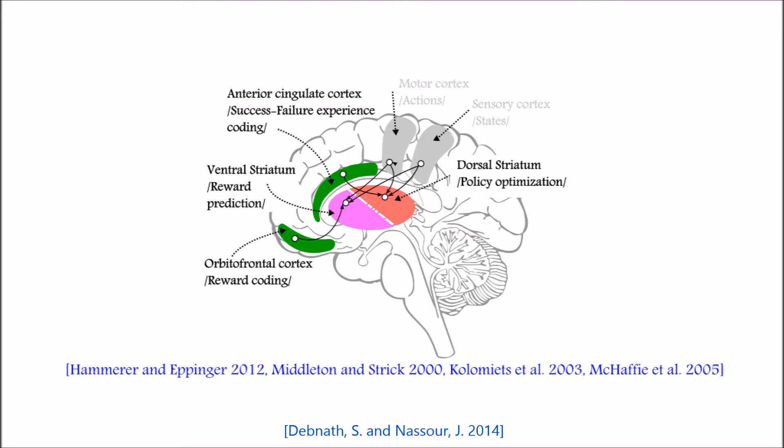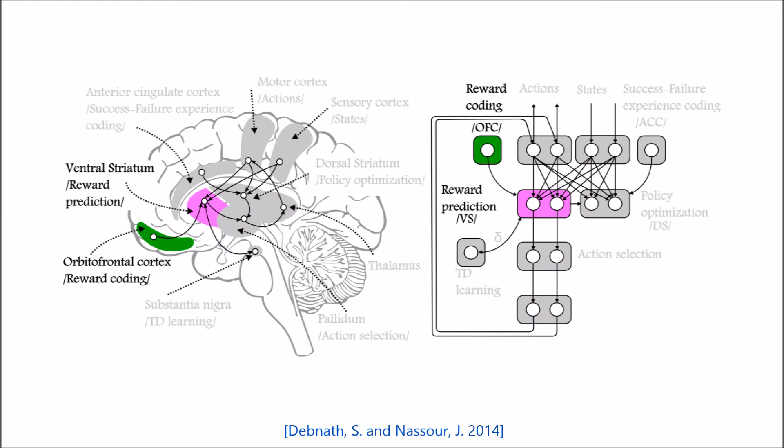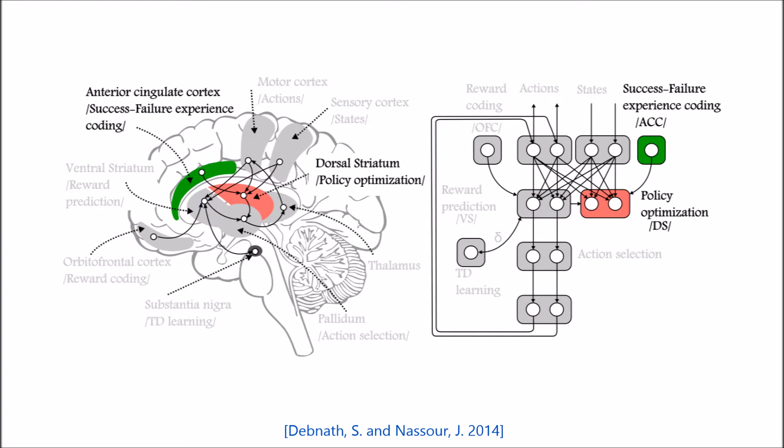Neuroanatomical studies of cortical and subcortical loops involved in reward-based learning showed that cortical inputs of the striatum can be mainly categorized into two parts. The first part involves the OFC that targets the ventral striatum. This part is involved in reward prediction. The second part involves the ACC that targets the dorsal striatum. This part is responsible for finding the optimal policy. Based on these studies, our model highlights three important connections: the connection between the OFC and the ventral striatum, the connection between the ACC and the dorsal striatum, and the connection between the ventral striatum and the dorsal striatum.